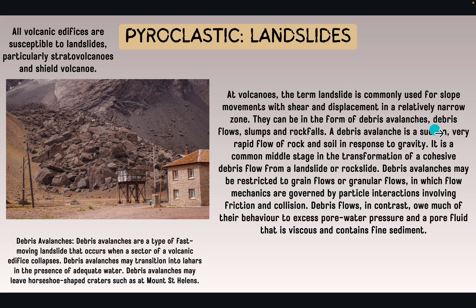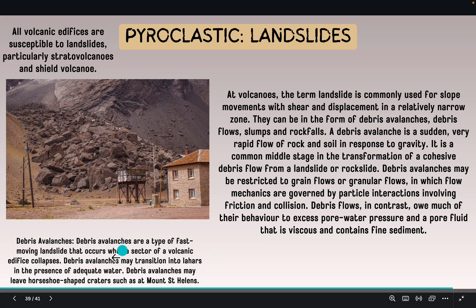The last secondary hazard is landslides from volcanic eruptions. All volcanic edifices — basically structures — are susceptible to landslides, particularly stratovolcanoes and shield volcanoes. The term landslide is commonly used for slope movements with shear and displacement in a relatively narrow zone. They can be in forms of debris avalanches, debris flows, slumps, and rock falls. A debris avalanche is a sudden, very rapid flow of rocks and soil in response to gravity, and is a common middle stage in the transformation from a cohesive debris flow from a landslide or rock slide. Debris avalanches may be governed by particle interactions involving friction and collision.